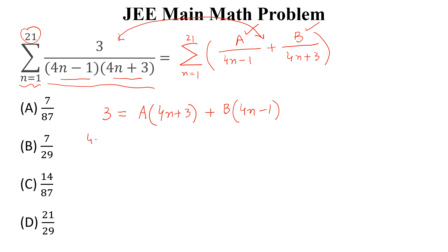Now we consider 4n minus 1 is equal to 0 and n is equal to 1 by 4. So 3 is equal to A into 4, which gives A equals 3 by 4.